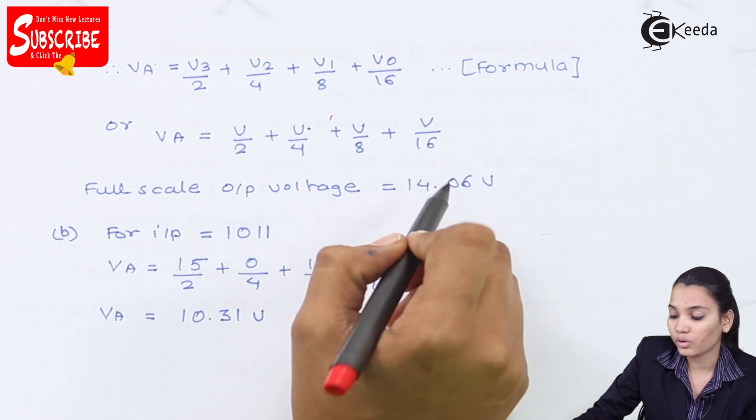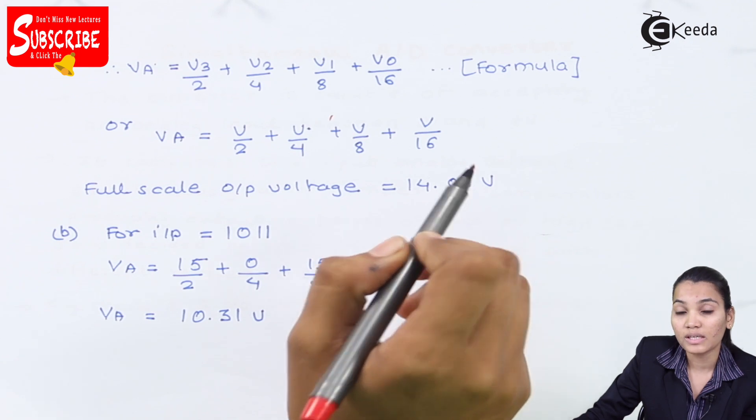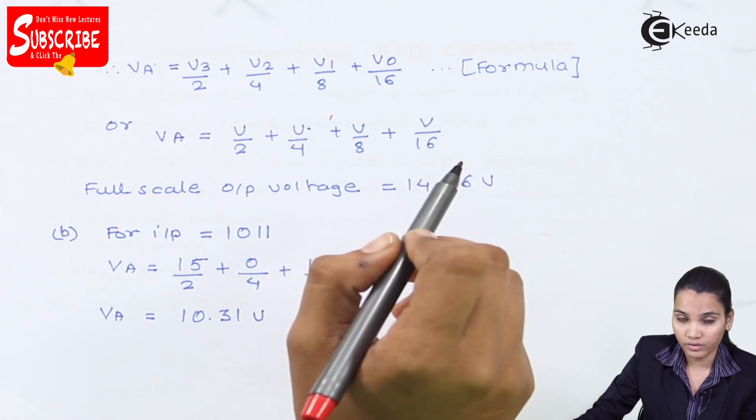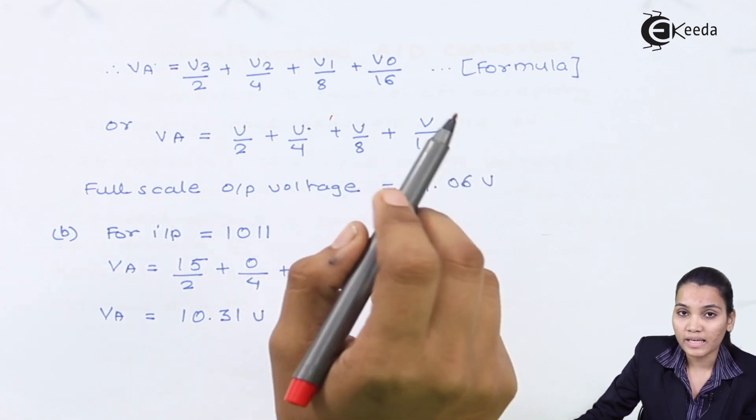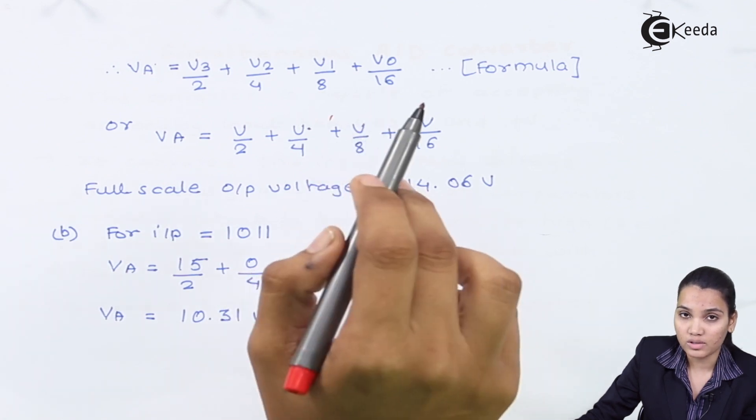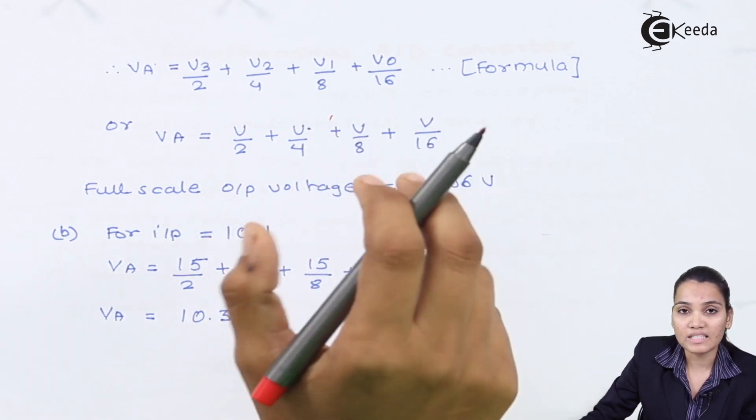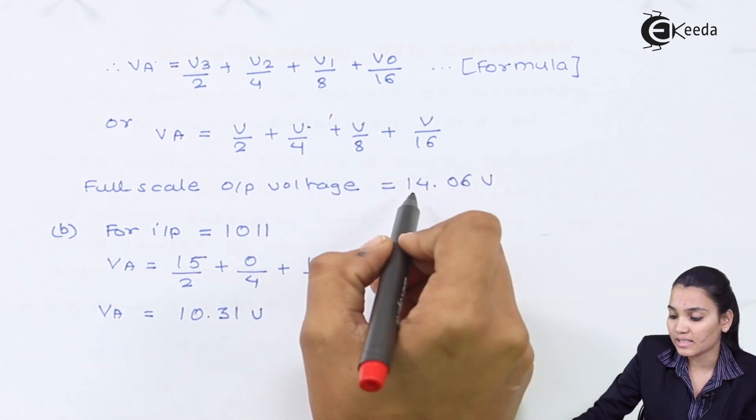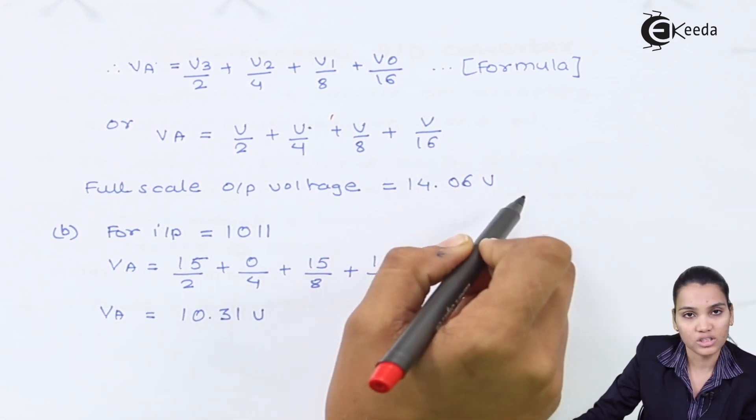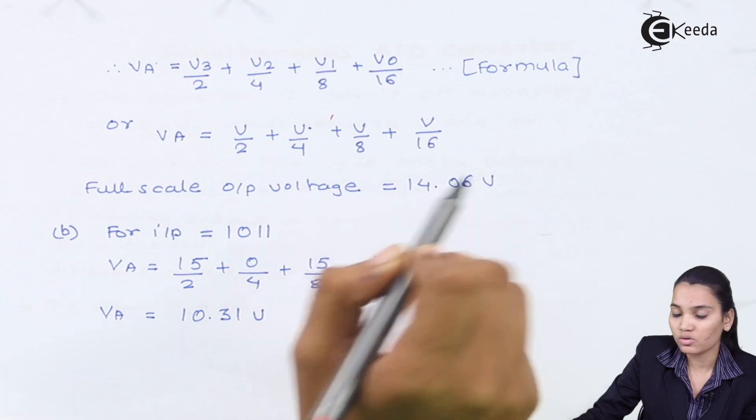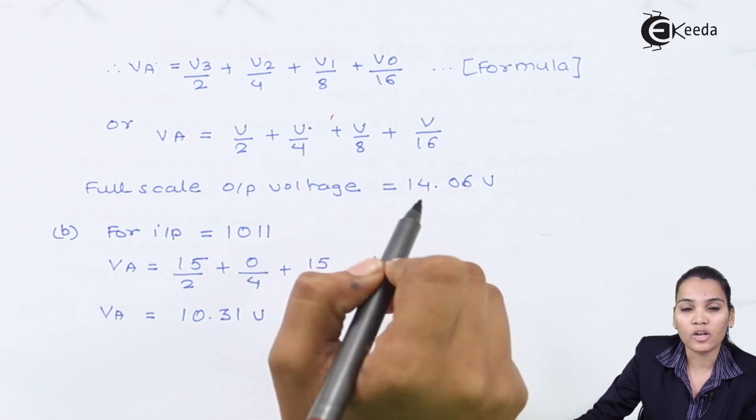So what does the 14.06 voltage value indicate? That means in the DAC converter when you will apply the maximum digital inputs, that is the maximum digital inputs are 1, 1, 1, and 1, the maximum analog voltage you will get is nothing but 14.06 volts. Above 14.06 volts you won't get any analog voltage value.